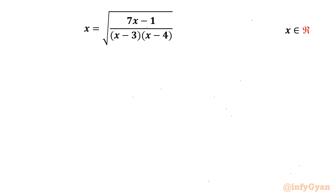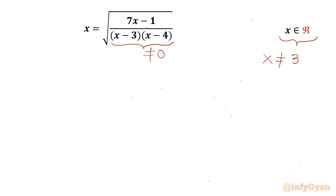Welcome back to Infigyan, my dear friends. In this video we have one very interesting question from Radical Equations. The given equation is x equals square root of (7x minus 1) over (x minus 3)(x minus 4). We are going to calculate real solutions only. Let's get started by writing that our denominator cannot be 0, so x cannot be 3 and 4.